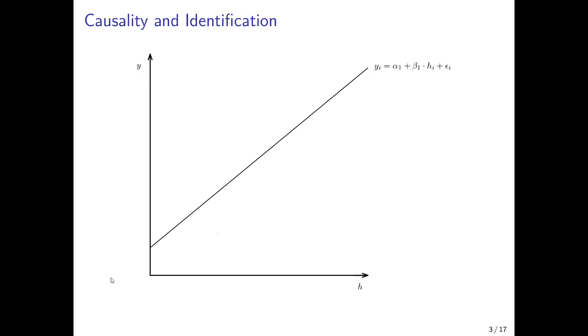It has an intercept alpha 1 and a slope beta 1. So if the population is healthier, per capita GDP increases with a slope of beta 1 and there is a measurement error epsilon i.